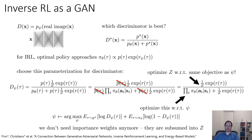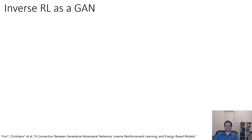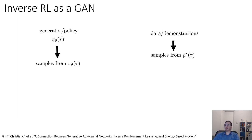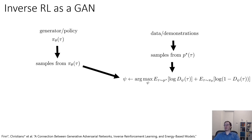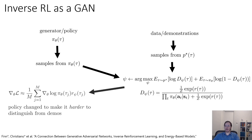The policy is optimized just like the generator in a GAN to maximize the reward. So we have our generator/policy, we generate samples from that policy, we have our data/demonstrations which are samples from p* of tau, we train our discriminator with respect to the standard GAN objective — but the discriminator has this special form — and we optimize the policy to maximize the expected reward and entropy. So the policy changes to make it harder to distinguish from the demos.